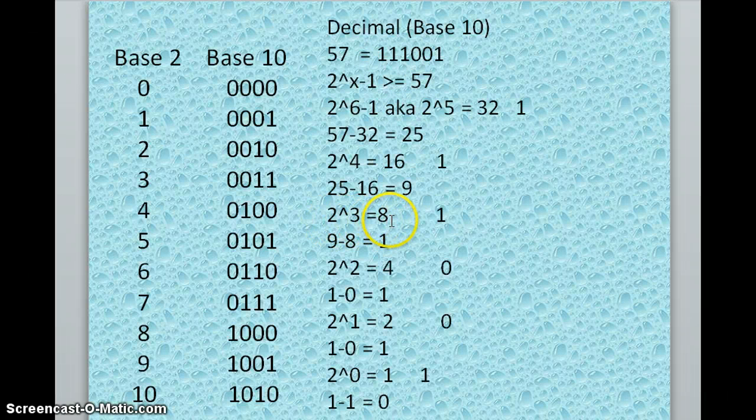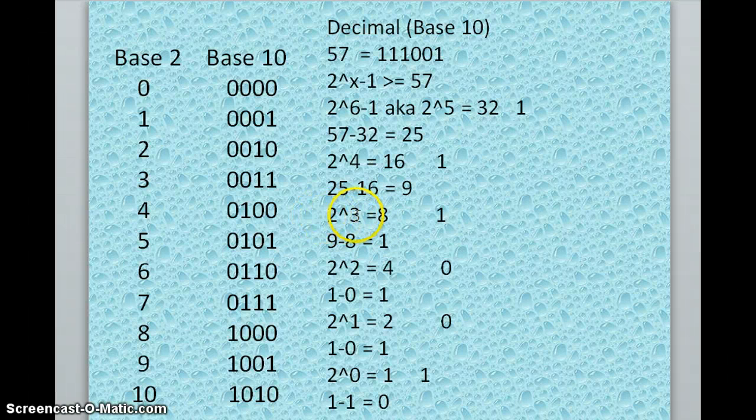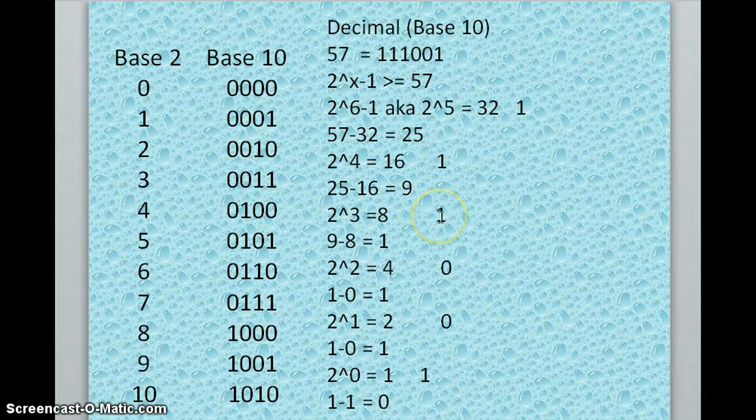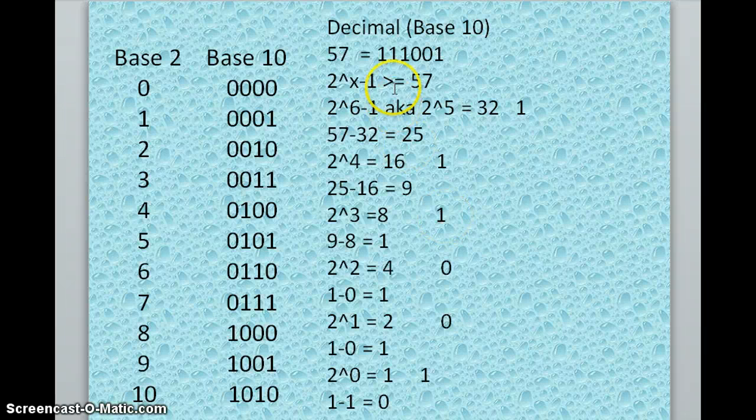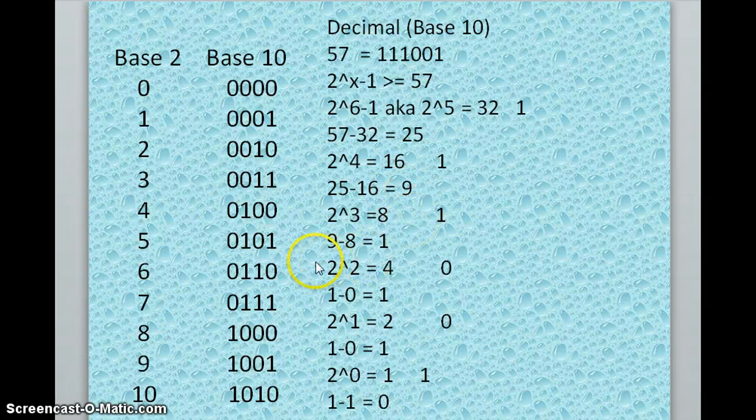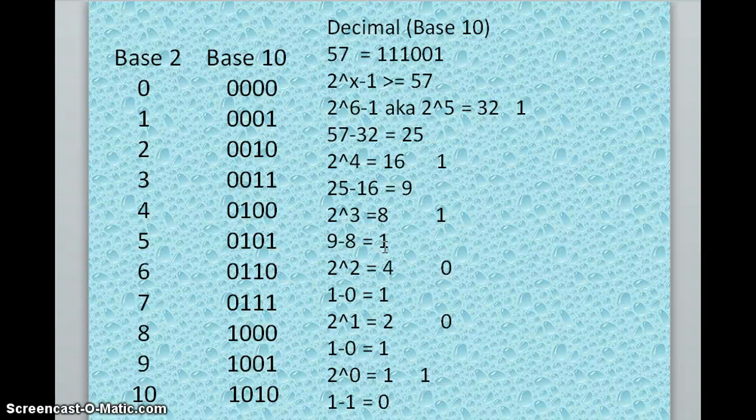Now, we have a remainder of 9. So we'll say 2 to the 3rd is 8. Is 9 minus 8 greater than or equal to 0? Yes, it is. So we're going to use that, and we're going to subtract that number from the remainder. 9 minus 8 is 1. So our remainder is now 1.